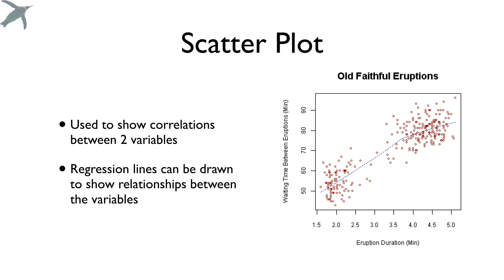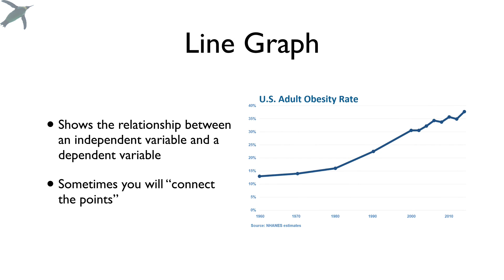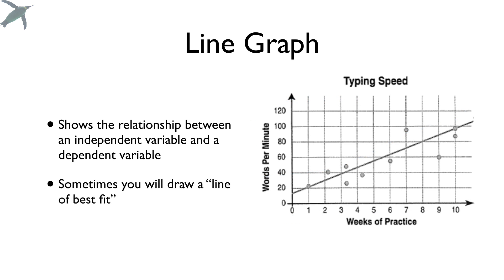A scatter plot is used to show correlations between two variables. Usually we're looking to see is there a relationship between these two variables. And you'll often see a regression line that is shown to express that relationship if there is one. A line graph is something that we're going to be looking at in more detail. It shows you a relationship between a dependent and an independent variable. In some line graphs, you will be asked to connect the data points like the one shown here. And sometimes you will be asked to draw a line of best fit, and we're going to be doing that here in just a moment.